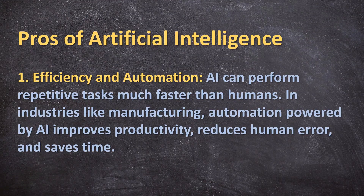Pros or advantages of artificial intelligence. First, efficiency and automation. AI can perform repetitive tasks much faster than humans. In industries like manufacturing, automation powered by AI improves productivity, reduces human error and saves time.